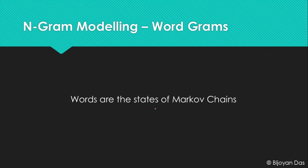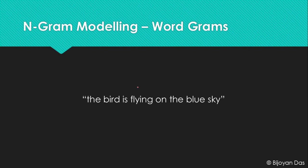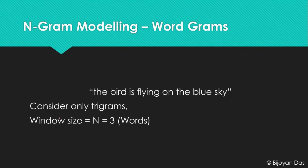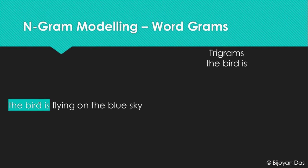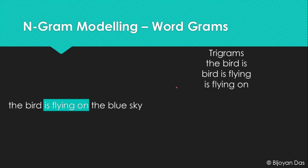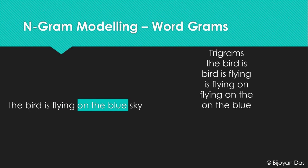Now let's talk about word n-grams, where words are the different states of the Markov chain. Using the same example 'the bird is flying on the blue sky' with N equals three (window size three), we select three words at a time — not characters. The first trigram is 'the bird is', then we move the window by one word stride to get 'bird is flying', then 'is flying on', 'flying on the', 'on the sky', and 'the blue sky'.